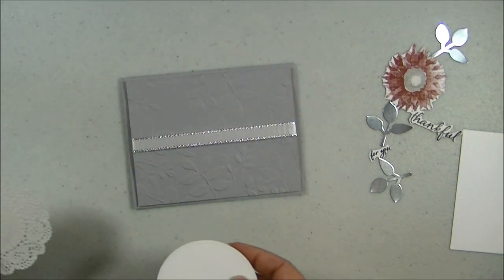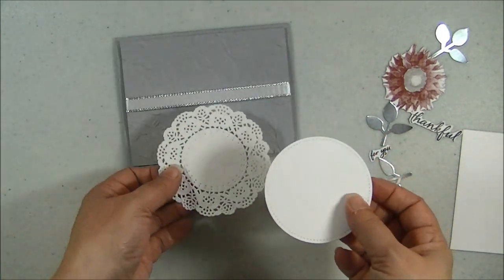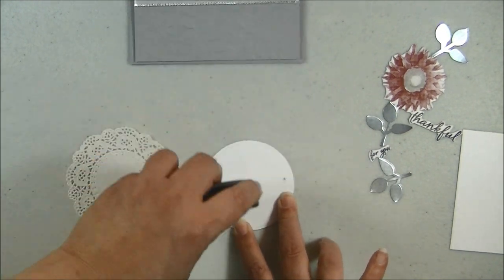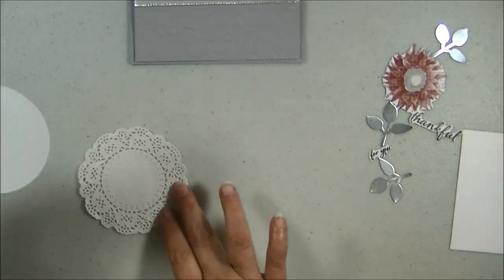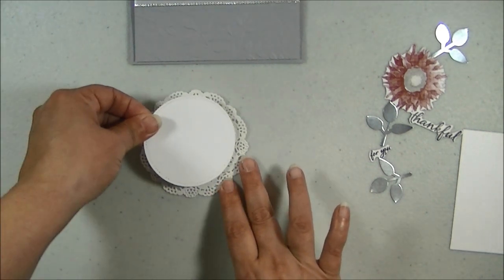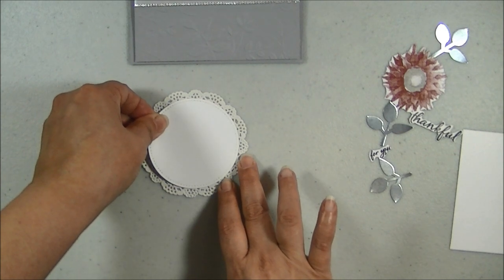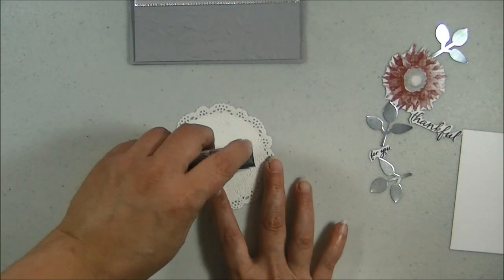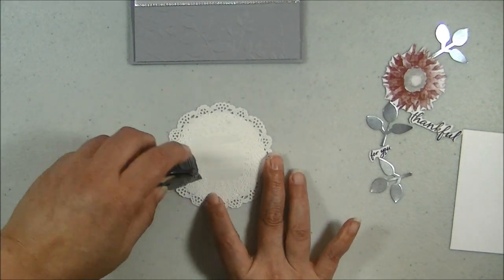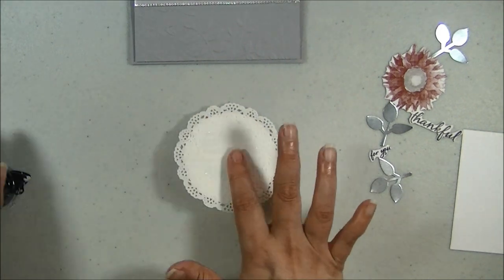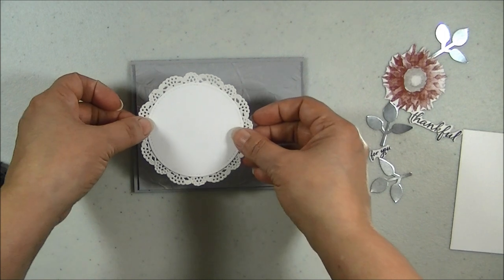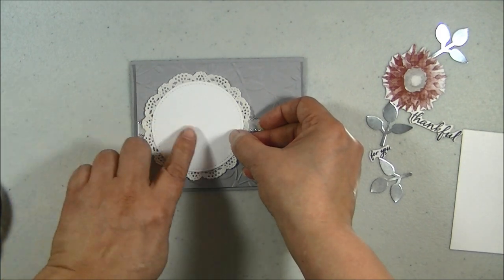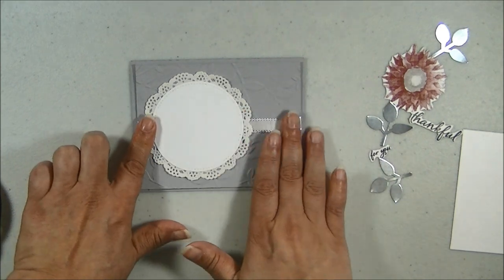So now we are going to grab our stitched circle and doily. And I am going to grab my Fast Fuse and put it on my circle. Then I will mount that, centering it onto my doily. Like so. And then we will flip that over and grab my Snail. Fast Fuse and delicate doily do not play nice. Just getting some Snail Adhesive on here instead. And then I am going to set that off to the left a little bit, exposing just a little bit of the ribbon on the left hand side. But just a little bit. So there is that.